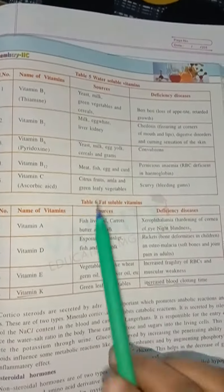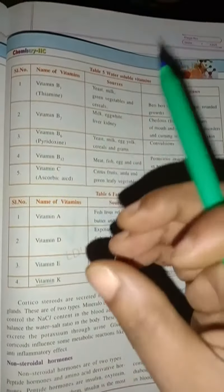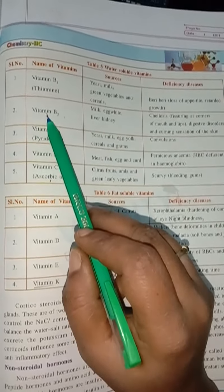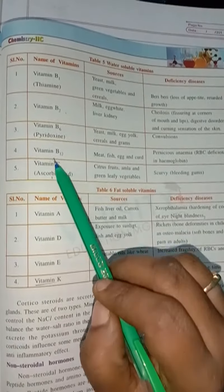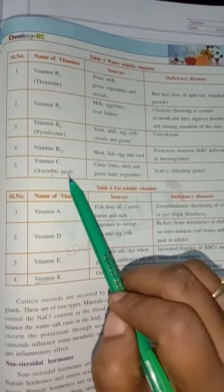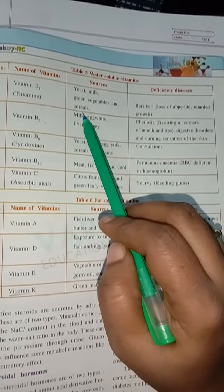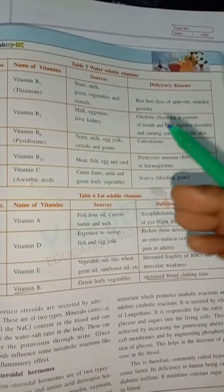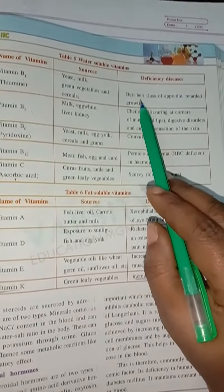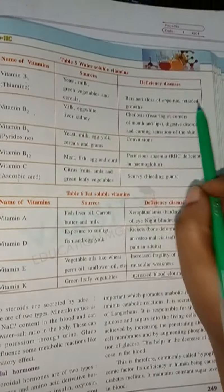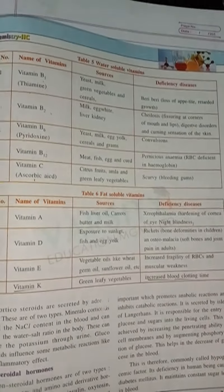Looking at the table — water-soluble vitamins: B1 (thiamine), B2, B6 (pyridoxine), B12, and vitamin C (ascorbic acid). Vitamin B1 thiamine is present in yeast, milk, green vegetables, and cereals. Its deficiency causes beriberi — loss of appetite and stunted growth.